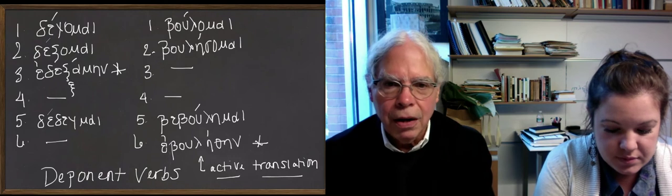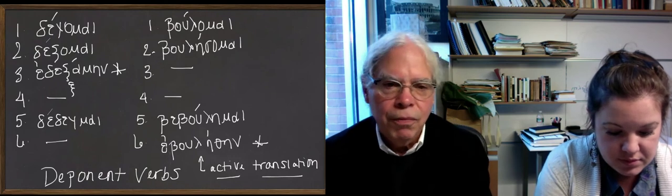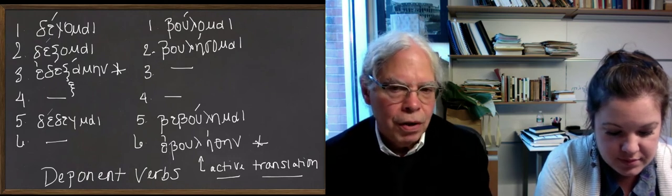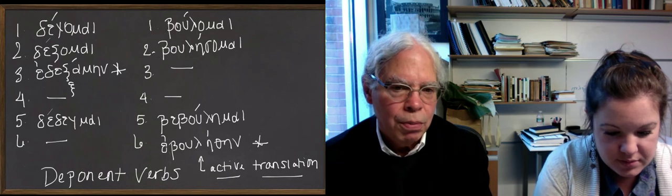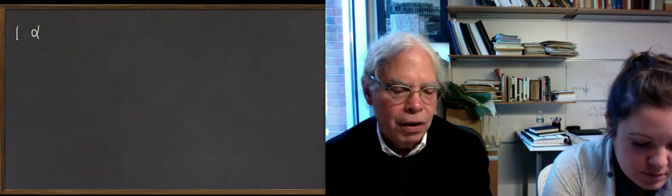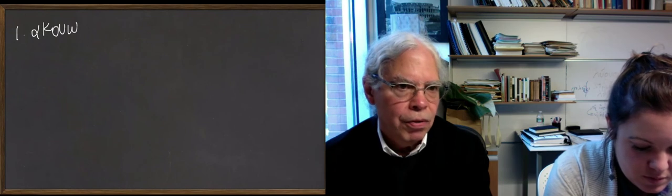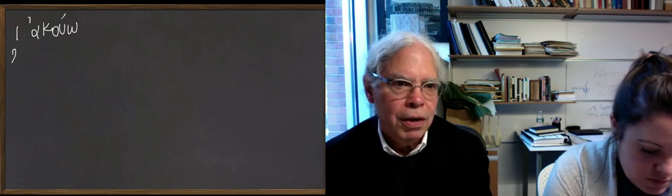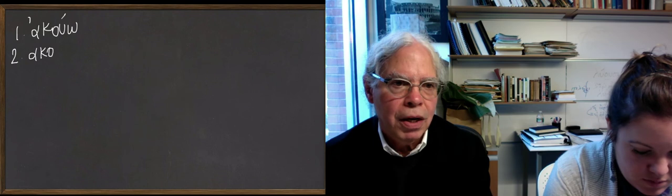All right. The third item in this category is that there are some verbs, and there is one in this lesson, the verb ἀκούω, which means to hear. The principal parts of ἀκούω go like this. Ἀκούω is the first one. It means I am here and I hear.